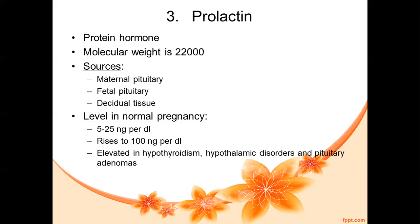Elevated amounts of prolactin can be seen during pregnancy when the woman is having hypothyroidism, hypothalamic disorders, or pituitary adenomas.